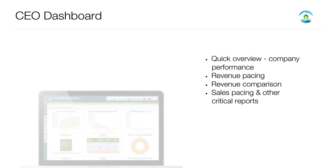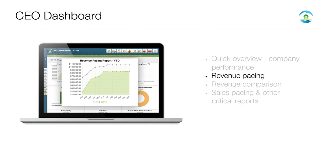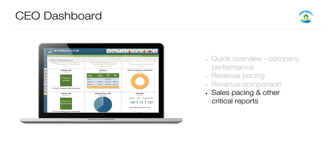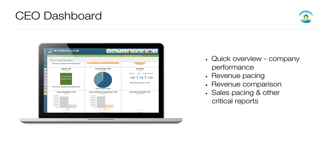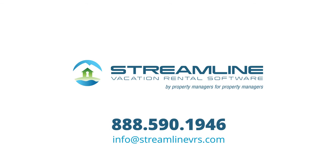Finally, our CEO dashboard provides key reports that will give you a quick overview about the state of your company. Quickly look at revenue pacing, compare revenue year-over-year, and evaluate how your sales team is doing versus previous years. These in-depth reports will help identify any potential issues in your company. Maybe it is time to raise prices because your revenue is more than double the previous year. We are the industry's first all-in-one solution. Click below to schedule a demo today to learn more about these and many other exciting features offered by Streamline Vacation Rental Software.